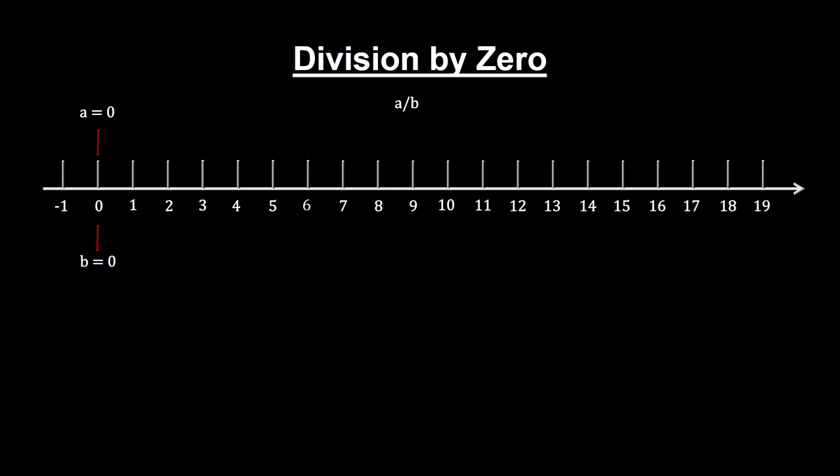Now, if a is 0, we're asking, what number, when multiplied by 0, would give us 0? The answer is any number at all, because any number multiplied by 0 would give us 0. This makes 0 divided by 0 completely undetermined. It can be any number you can think of. This is what gave us the 1 equals 2 result.